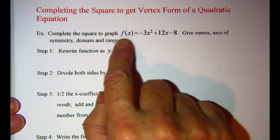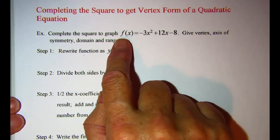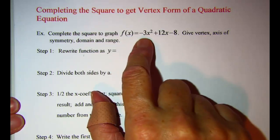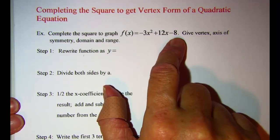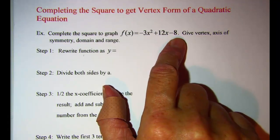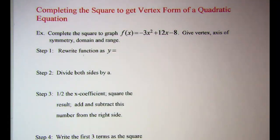The example that we will be working with is f(x) equals negative 3x squared plus 12x minus 8, and we are told to complete the square to graph that function and then give the vertex, the axis of symmetry, the domain, and the range.